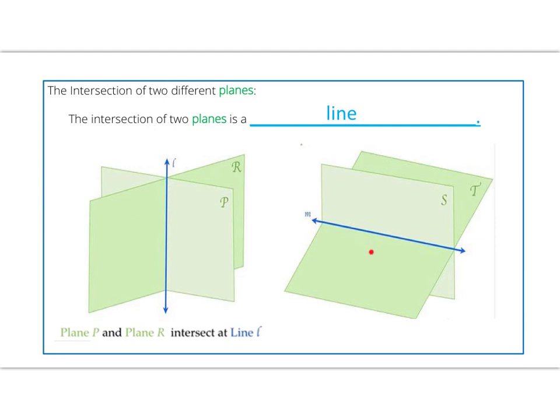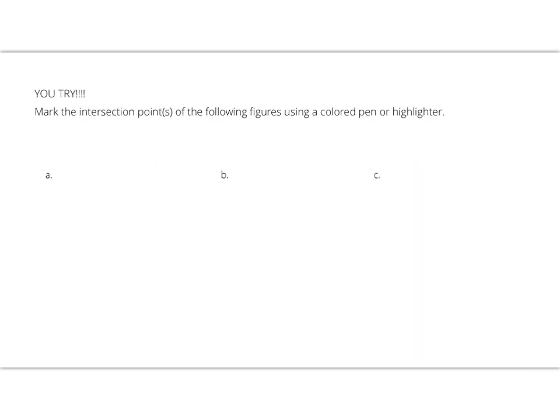Let's take a look at this second example. We have plane T and plane S, and they're intersecting at this line here called M. The way you describe it: plane S and plane T intersect at line M.